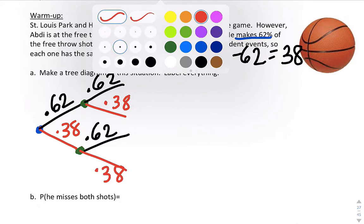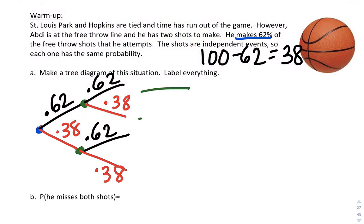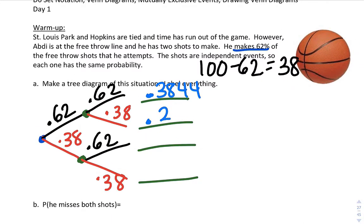Okay, and then we know to multiply along the branches for the different probabilities of each happening. So the probability that he makes it and makes it is 0.3844. You multiply them together. The probability that he makes and misses, multiply those, we get 0.2356 and 0.2356. And the probability that he misses both is, if you multiply that together, 0.1444.